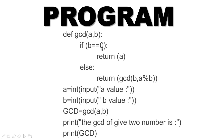GCD of 100, 50 — if B value is 50, A value is 50. The base condition is checked: B is equal to 0. That is 0 equals 0. The variable is equal to 0. The return value is equal to 50.